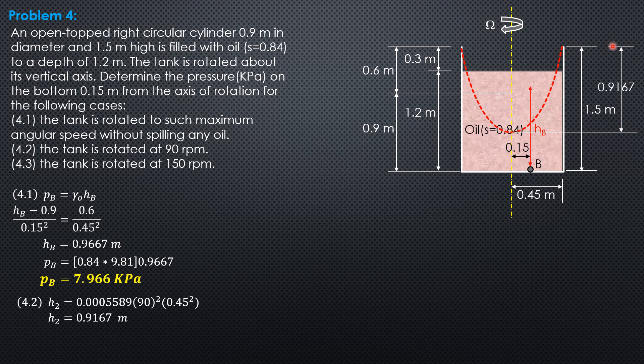This is 0.9167 meter. Therefore, this is 1.5 minus 0.9167, which is 0.5833 meter. Then, HB is the distance from B to the imaginary parabolic surface of zero pressure.